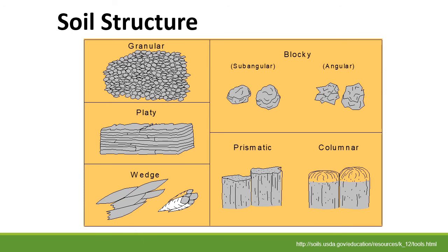Soil textures also affect soil structure — whether it's granular, platy (looking like layers on top of another), angular or blocky, prismatic (with little prisms or columns), or wedge-shaped soils that fit together like pieces. All of these structures are created by the bedrock type, the parent material, and the soil texture.